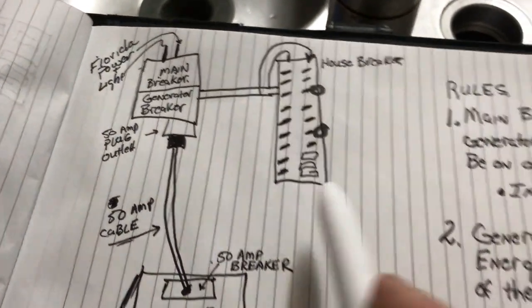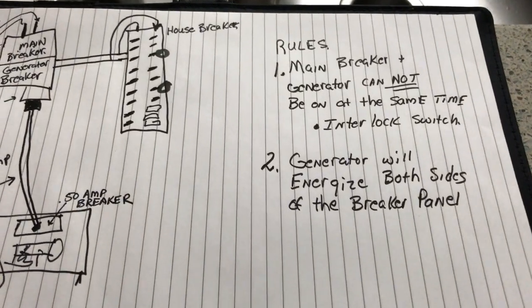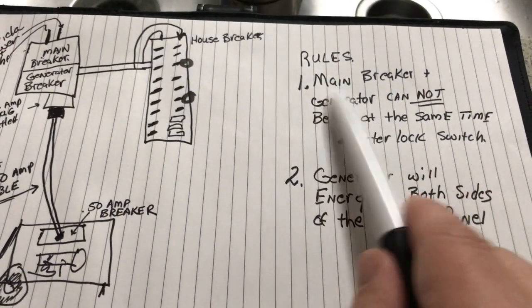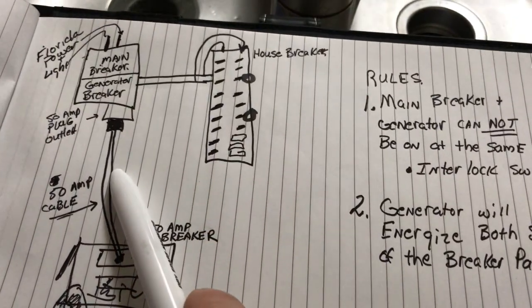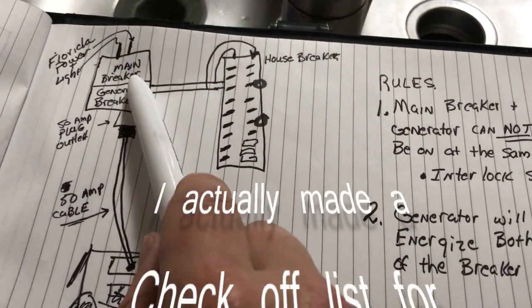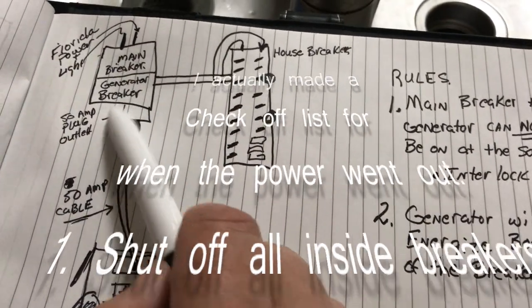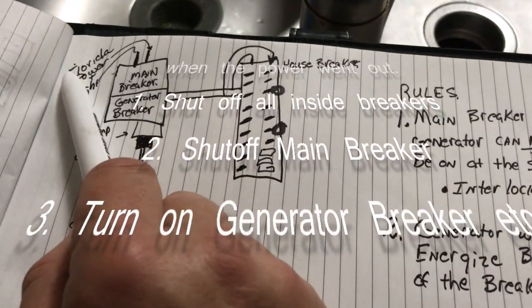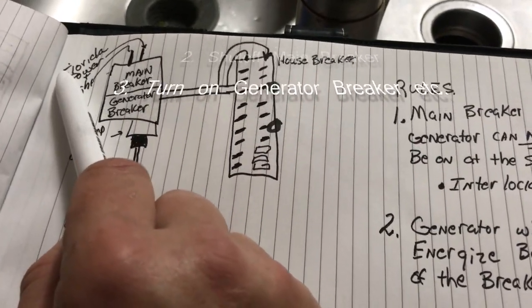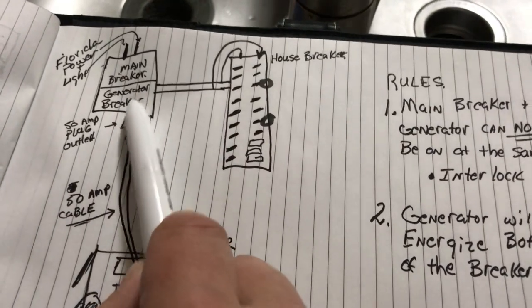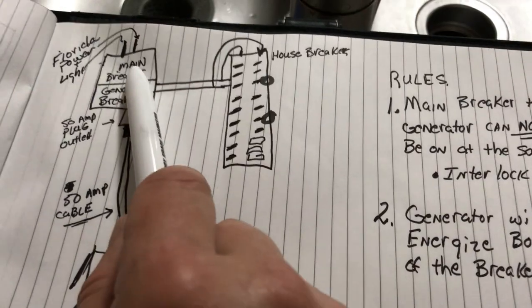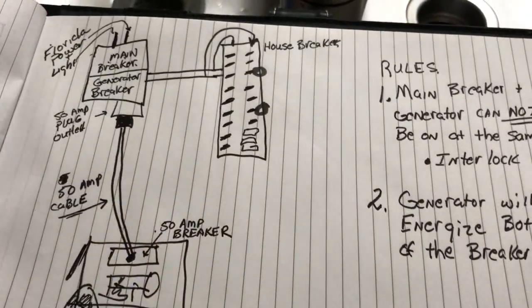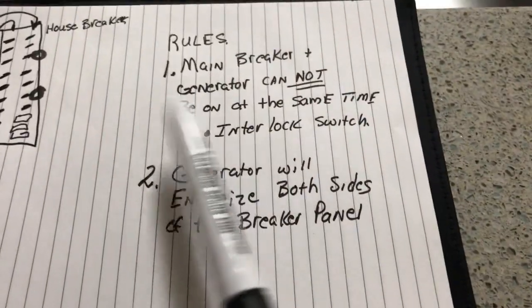Let's go over a couple of rules. The generator and that main breaker cannot be on at the same time. That's what the interlock switch is for. I'll be getting that. You will electrocute somebody if you're having power going, because the power will go back out to FPL and fry some guy out there on the utility pole. Don't be a murderer. Never have these two on. After the hurricane was over, shut this guy off, turn this guy back on. Make sense?